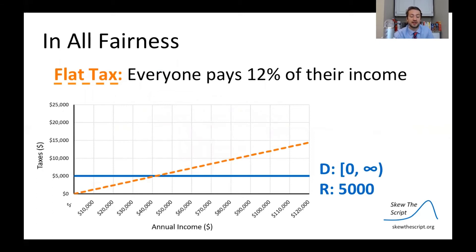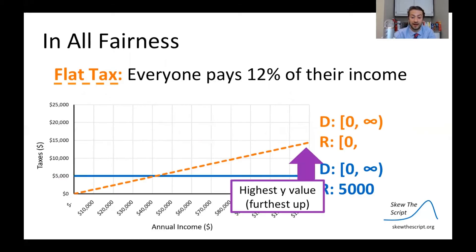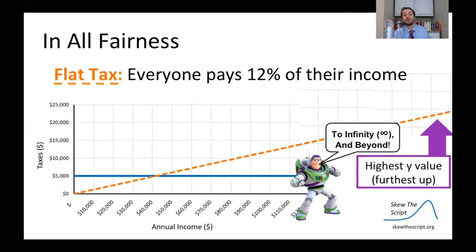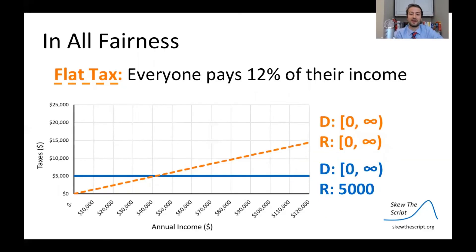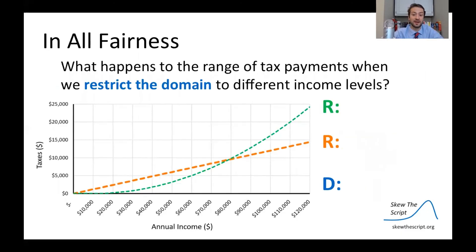For the flat tax, shown in orange dotted line, everyone pays twelve percent of their income. The domain is again zero to infinity. The range: the lowest y-value is zero — an inclusive endpoint, so we use a bracket — and the highest y-value goes to infinity. The progressive tax, plotted in green, curves upward, where the percent paid increases with income. It has the same range as the flat tax: lowest value is zero and highest is infinity.